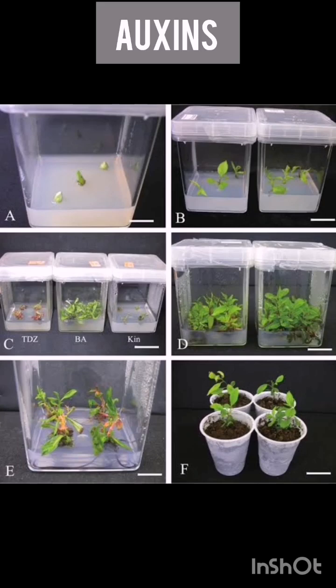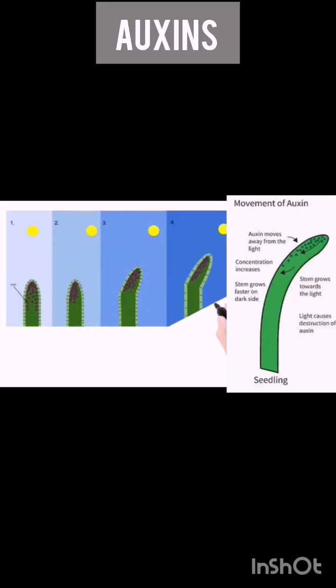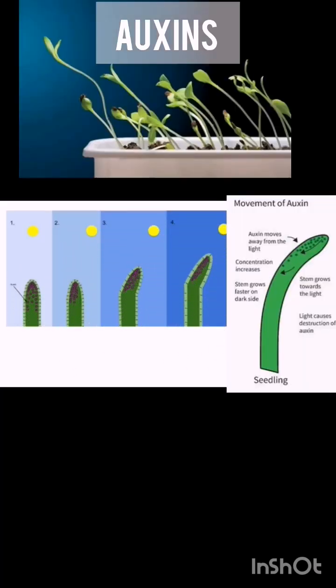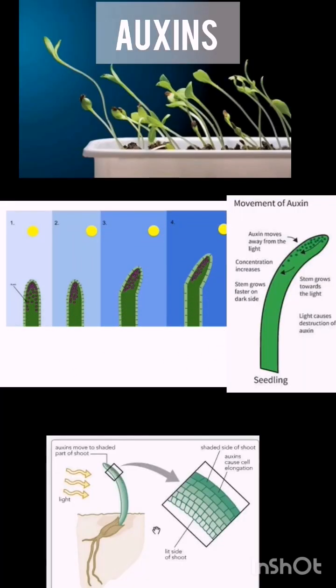They can also drastically affect plant orientation by promoting cell division to one side of the plant in response to sunlight and gravity.